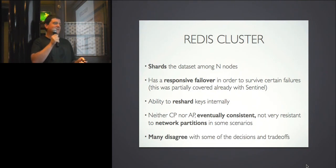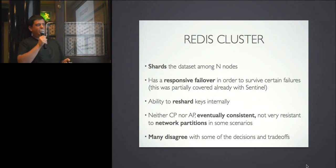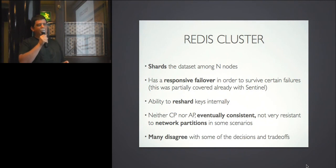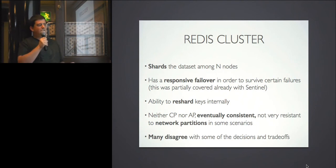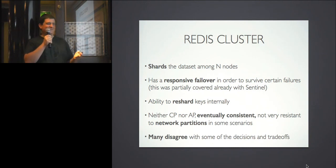Redis Cluster also supports resharding, so no more painful resharding experience — but again, who will be first to try it with millions of keys? In the NoSQL ecosystem there's the CAP theorem, and the Redis creator says it's neither CP nor AP — it's eventually consistent sometimes, but not very resistant to network partitions. Reading the documentation will scare you. For hundreds of nodes, Redis is not the solution — you should go with Cassandra or Riak, which are much better for those scenarios.